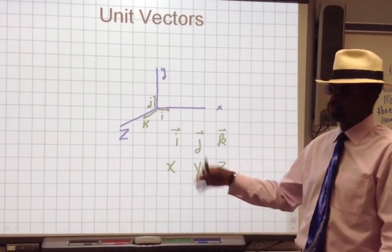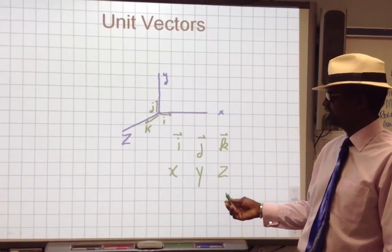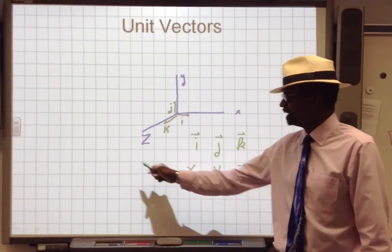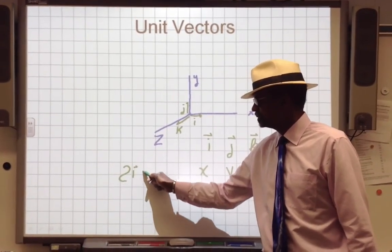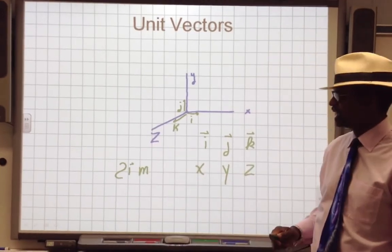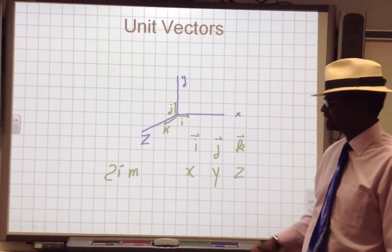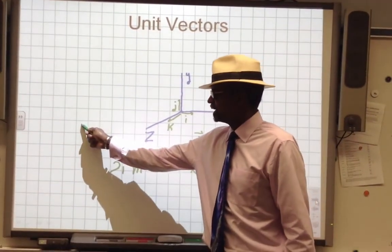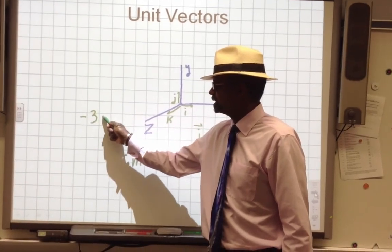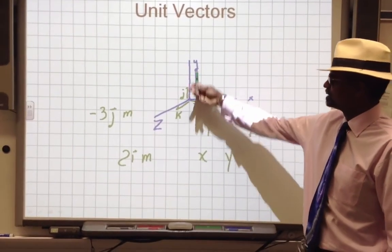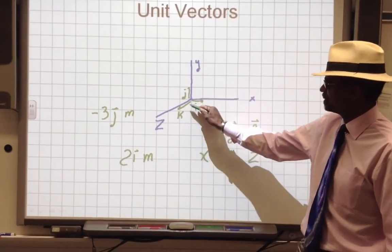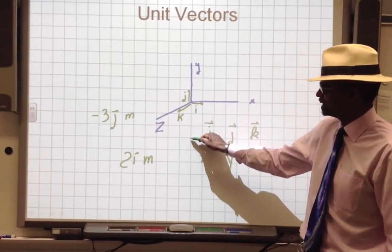Instead, you can simply say things like two meters, two i meters, and I know that I'm going in the positive x direction. If I say minus three j meters, I know that would mean, oh look, j direction is like this, but minus is that way. So I would go down three.